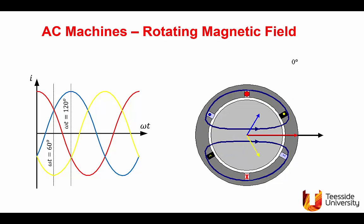You can check that when the current in any coil reaches zero, the field produced by that particular coil will vanish, and after that you will see that the direction of the field reverses for that coil. All the time, when you add the three magnetic fields together, you end up with a rotating resultant component — the black component shown here — that is rotating in space.